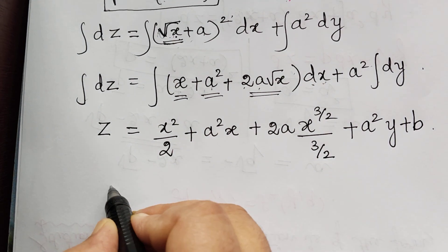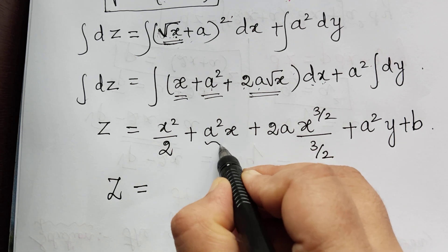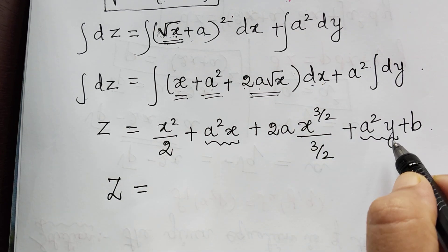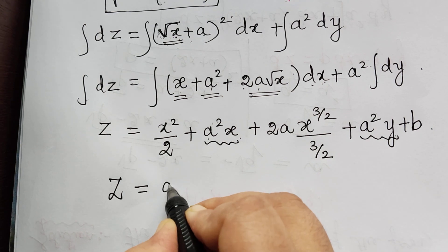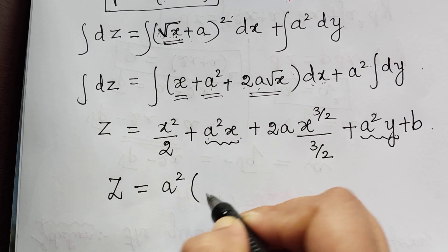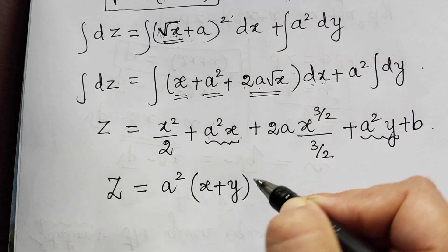We shall just rewrite this. So z is equal to, if you see, this a squared is common in these two terms. We have a squared x and a squared y. So we can put it together and we can write it as a squared taken as common and multiplied with x plus y. Plus, we have this x squared by 2 plus,